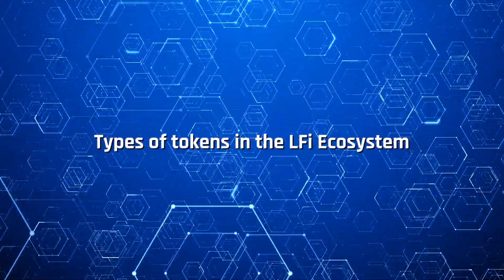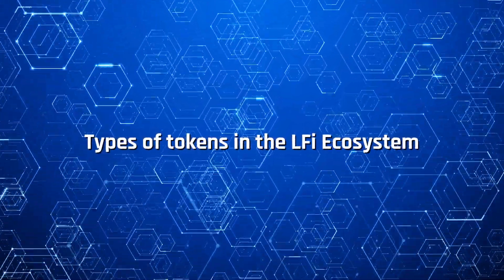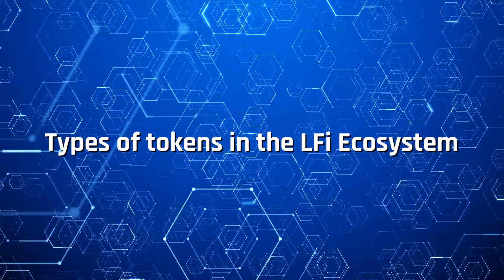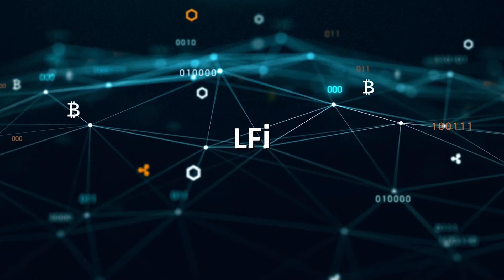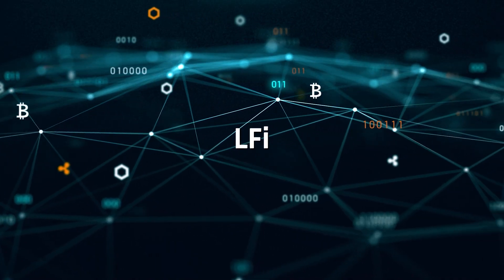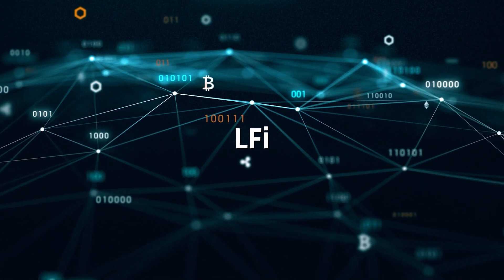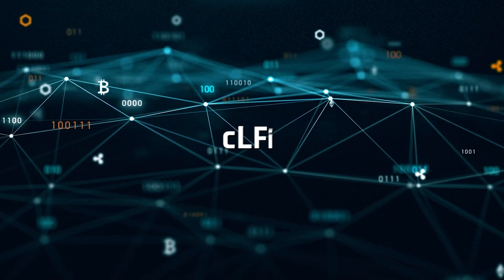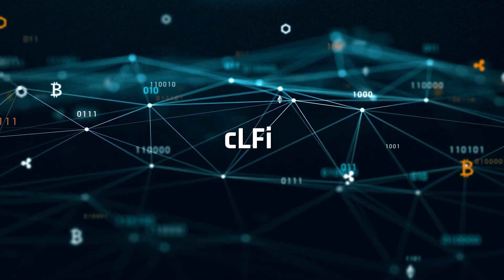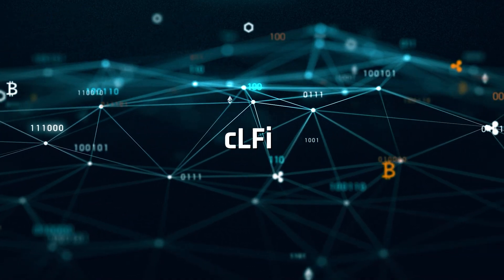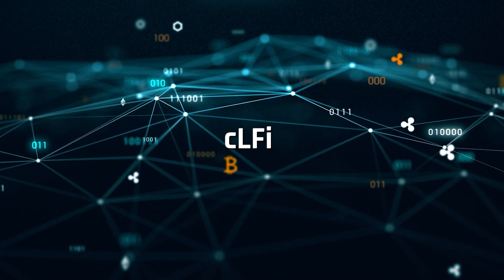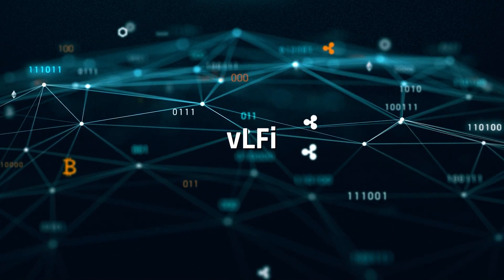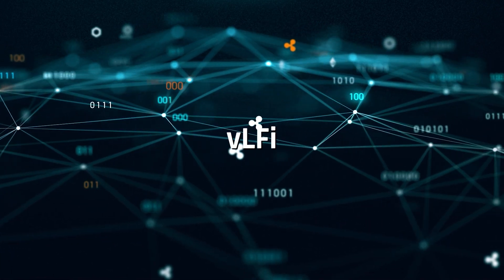There are three types of tokens in the LFI ecosystem. The first one is LFI, the native token of the LFI ecosystem. Second is C LFI token, the collateral token. And last is V LFI, the vested token.